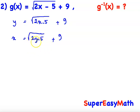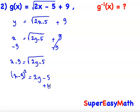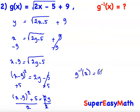The final step is to find y in terms of x. If we subtract 9 on both sides, we get x − 9 = √(2y − 5). Square both sides, so (x − 9)² = 2y − 5. Add 5 and divide by 2, so y = [(x − 9)² + 5] / 2. We write g⁻¹(x) = [(x − 9)² + 5] / 2.